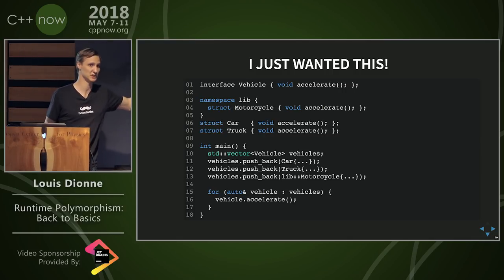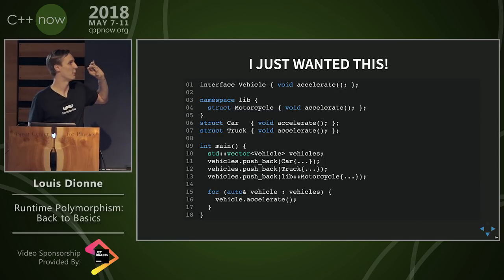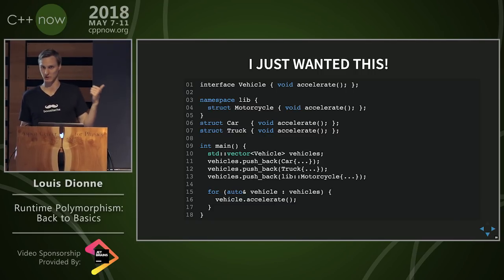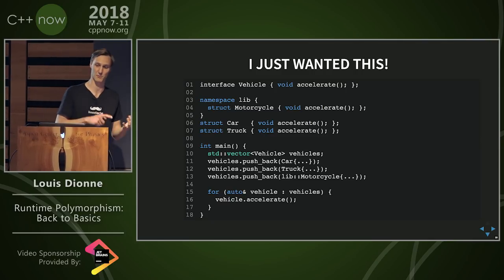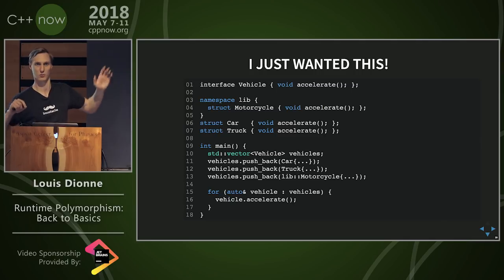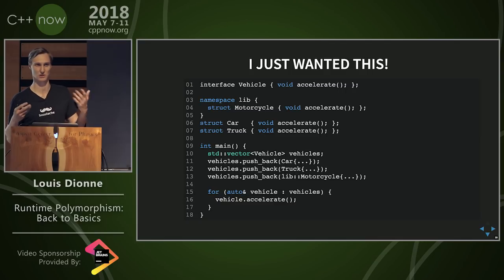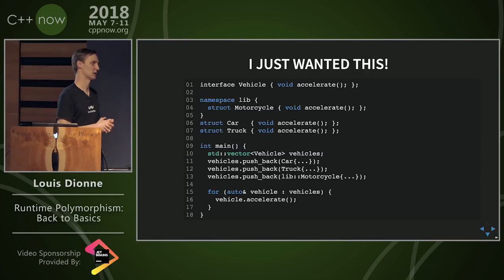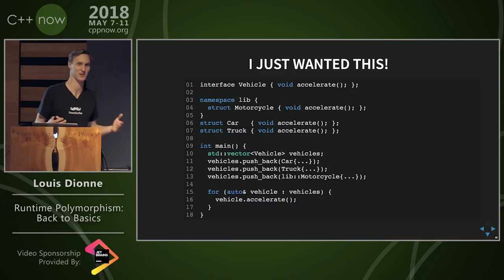So the remainder of this talk is going to be about how we can implement this 'interface' keyword. I'm going to talk about different ways we can implement this magic vehicle type — specifically, different ways we can store the actual truck, plane, or whatever inside the vehicle, and also how we can implement the dispatching, the method dispatching — essentially virtual table dispatching.